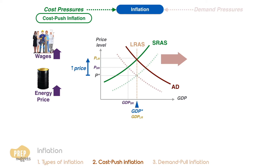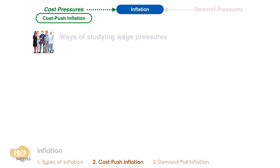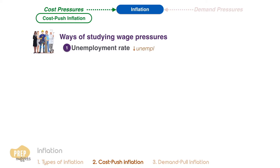The most prevalent source of cost-push inflation is the pressures caused by an increase in wages. Analysts have several ways to study wage pressures. The most straightforward is to look at the unemployment rate — the lower the unemployment rate, the higher the pressure on wages. However, most analysts acknowledge that the unemployment rate may not be the most effective indicator of wage pressures.